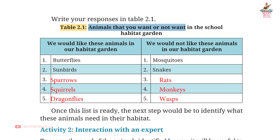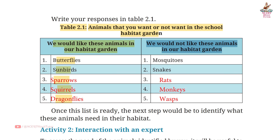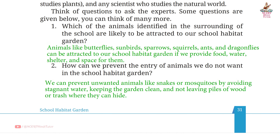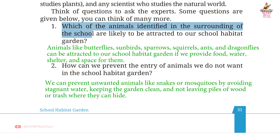Animals that we want or do not want in the School Habitat Garden. We would like: Butterflies, Sunbirds, Sparrows, Squirrels, and Dragonflies. We would not like: Mosquitoes, Snakes, Rats, Monkeys, and Wasps.